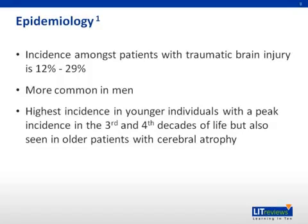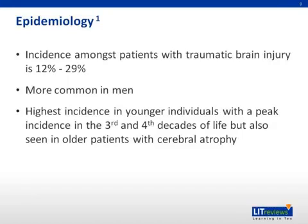Acute subdural hematomas are more common in the young and in men, likely because young men are risk takers and physically active, putting them at greater risk for traumatic injury. Chronic subdural hematomas, however, are more common in older patients with significant cerebral atrophy, patients with a history of chronic alcohol abuse, and patients with prior head injury. This is likely due to cerebral atrophy resulting in enlargement of the subdural spaces, causing the veins traveling through to become distended and more vulnerable to injury.